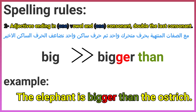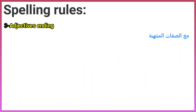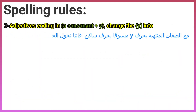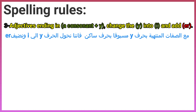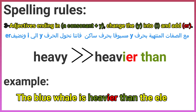The elephant is bigger than the ostrich. Rule 3 — adjectives ending in a consonant plus 'y' change the 'y' to 'i' and add 'er'. For example: heavy → heavier than. The blue whale is heavier than the elephant.